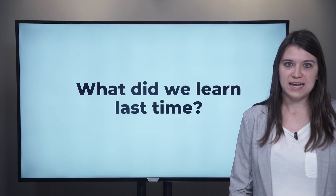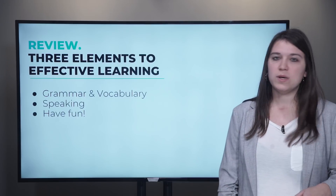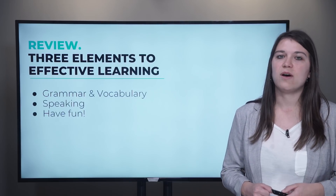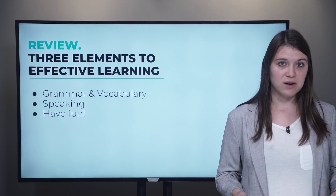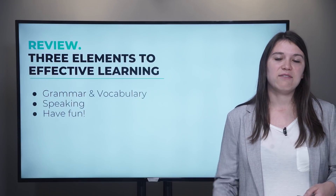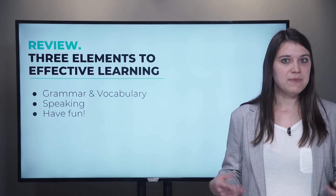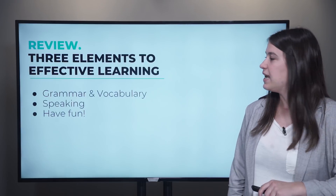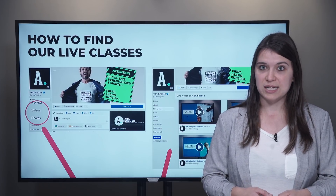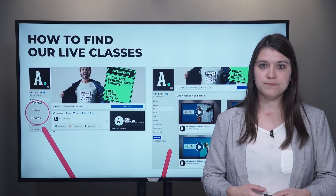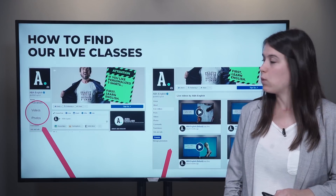So before we get started with today's lesson, let's review what we learned in last week's class in case you missed it. Last week we talked about the three elements to effective learning: first learning the grammar and vocabulary, then practicing your speaking, and then having fun while you are learning English. I told you about our new product called ABBA Unlimited. In case you missed that class and you want to watch it again, go to the video section of our Facebook page — you can find all of our previous classes there, watch them again as often as you want, take notes, share them on your own Facebook page, or tag someone who you think might want to watch them.